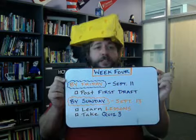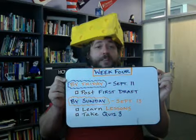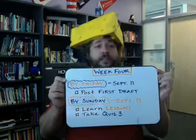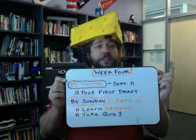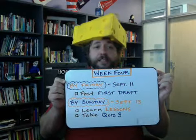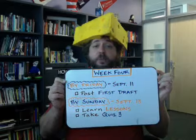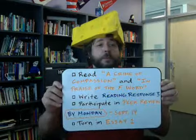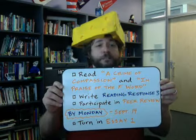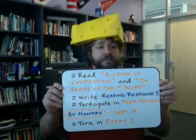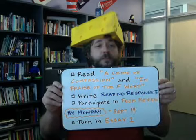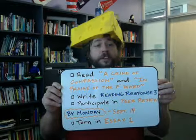By Sunday, September 13th, you need to accomplish five more academic tasks. First, learn the lessons for week four — to access that content, click on modules. Second, take quiz three, which will be based on the concepts covered in the lessons — to do that, click on tests and quizzes. Third, read both A Crime of Compassion and In Praise of the Effort — to find the PDF files of those readings, click on resources. Fourth, write reading response three, which will be about either A Crime of Compassion or In Praise of the Effort — to do that, click on assignments.